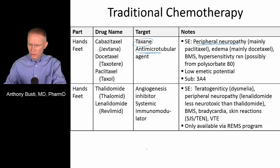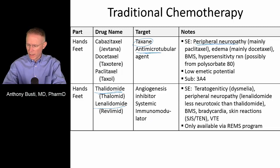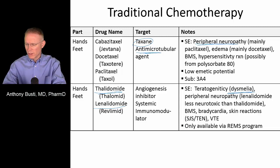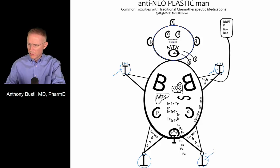Thalidomide and lenalidomide are angiogenesis inhibitors. They are very teratogenic — historically, use during pregnancy caused dysmelia, where infants had no arms and significantly affected extremities. Unfortunately, they also cause peripheral neuropathy. On antineoplastic man, the T's reflect both the taxanes and thalidomide specifically, given the shared peripheral neuropathy side effect.